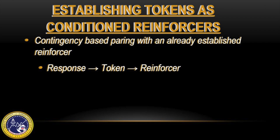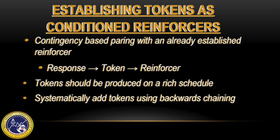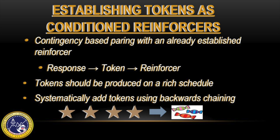During acquisition, tokens should be produced on a rich schedule such as a fixed ratio 1, or FR1. Additional token requirements can be added to the system by systematically adding tokens using backwards chaining. As you can see, additional tokens are now being added to the token system.